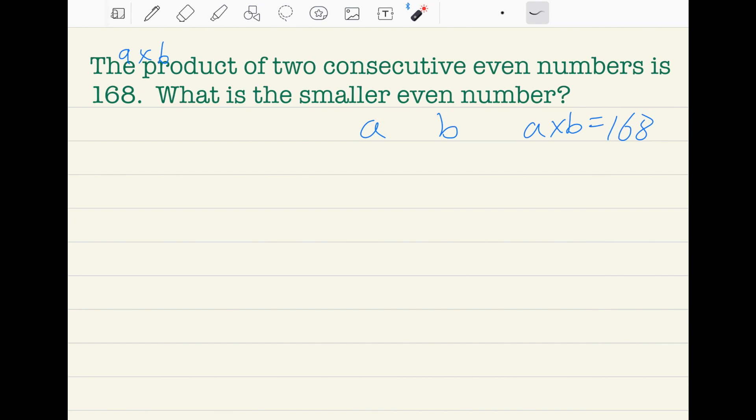So the product is multiplication, times I mean. And then consecutive means like going on and on, like 2, 4, 6, 7—I mean not 7, 8. It's even numbers, so it is consecutive even numbers. That is why it's 2, 4, 6, 8, not 7.